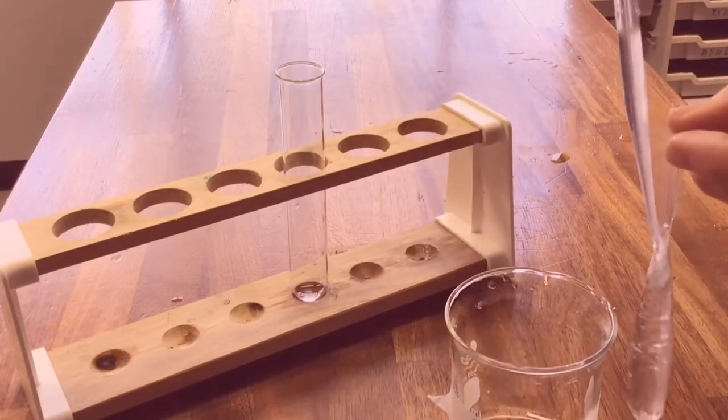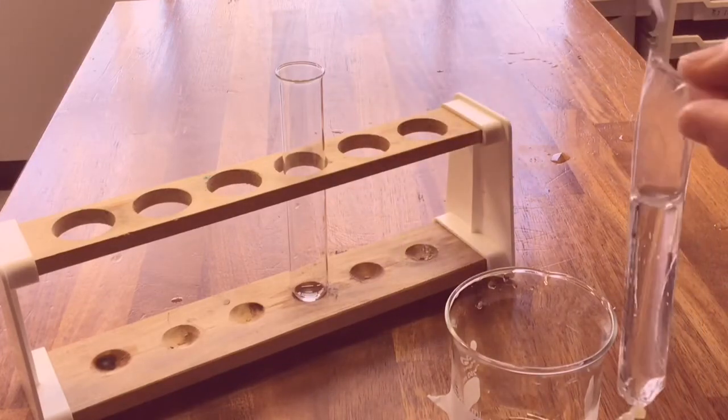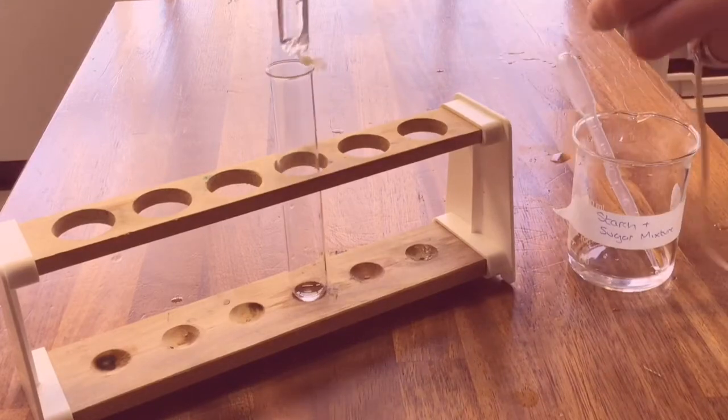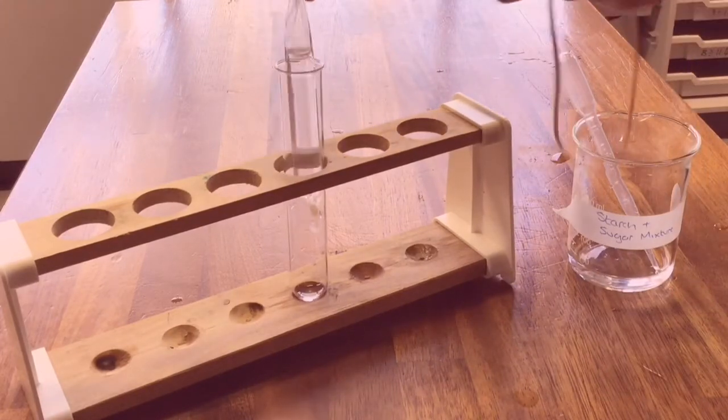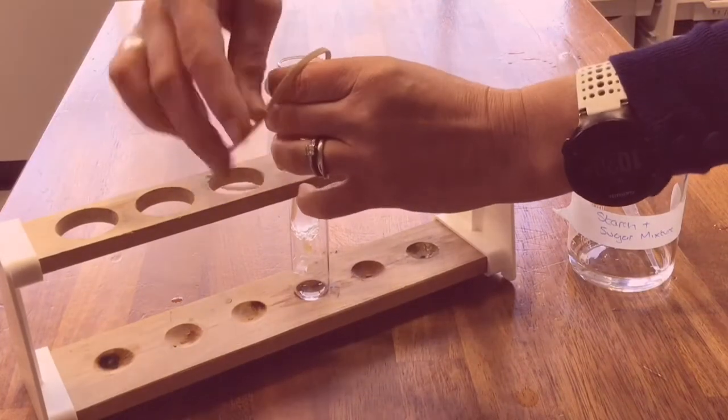We fill about three quarters full our visking tubing with our mixture of starch and sugar and then we place it into a boiling tube and secure the top end with an elastic band.